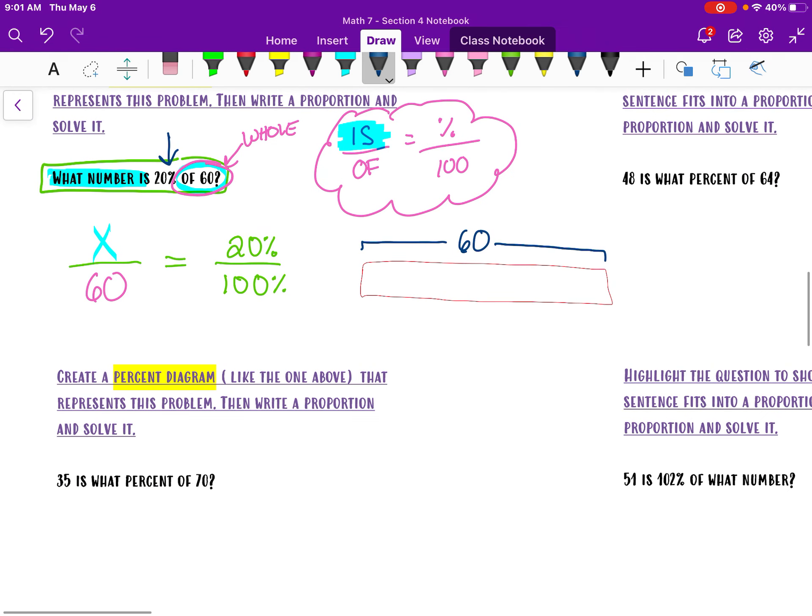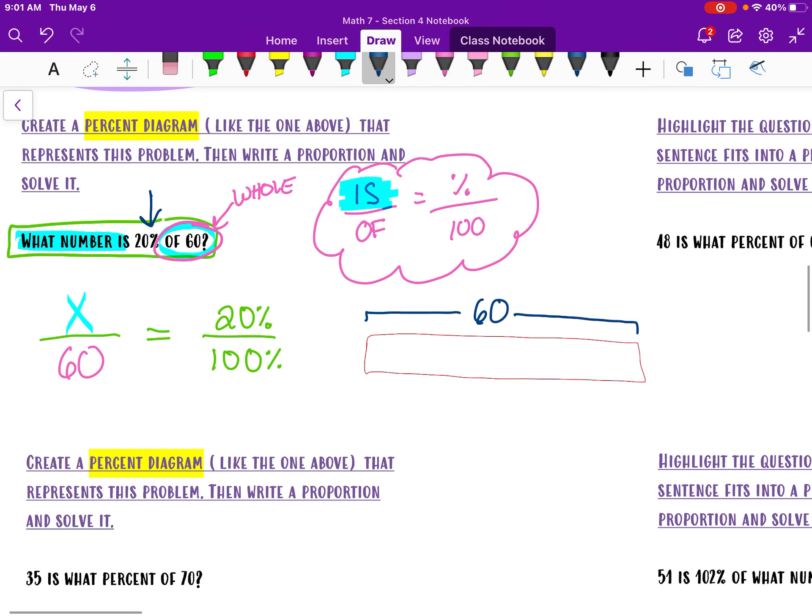Now, when I think about 20%, how many percentages would give me 100? So 20, 20, 20, 20, and 20. So I need five of those little parts. So I'm going to show 20% right here. And then I have 60 total.